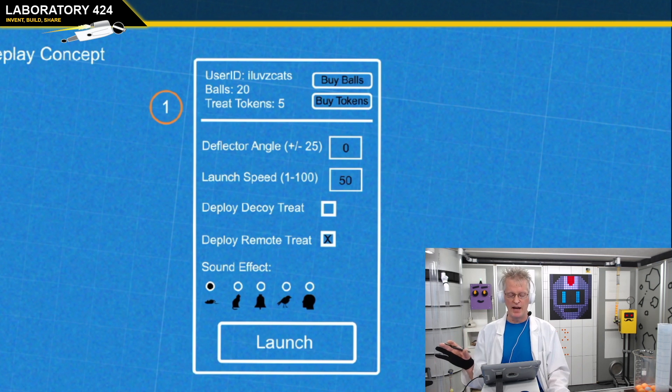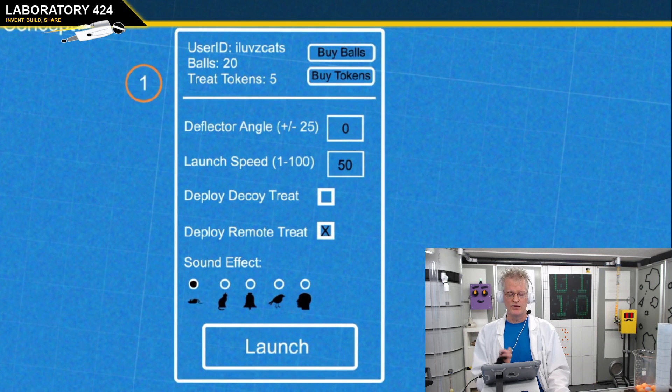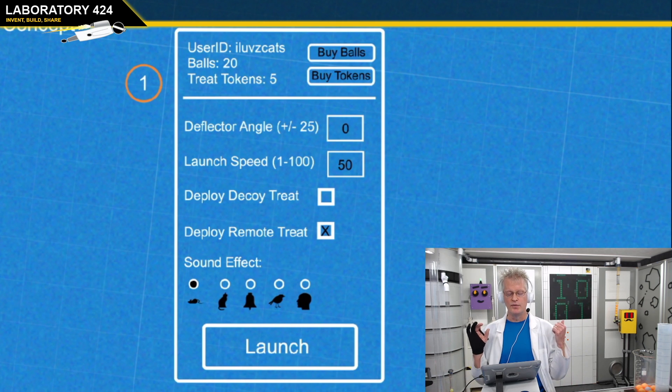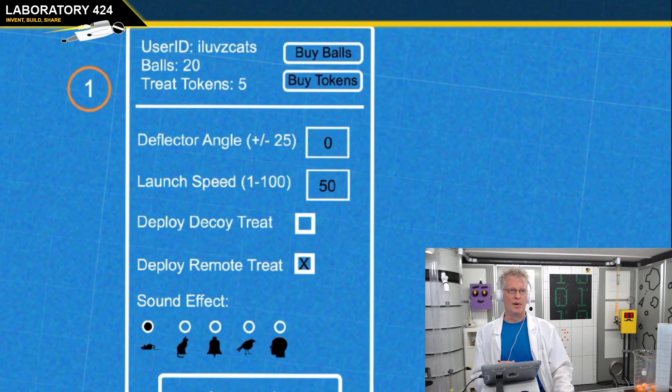But this could be a phone app. I visualize it being on a website and they just link to it. And this allows them to see their user ID. There's a whole authorization process. They see the number of balls they have, their number of treat tokens they have. Treat tokens are absolutely the best tokens. And then from there they can actually buy balls, buy tokens, do their thing.